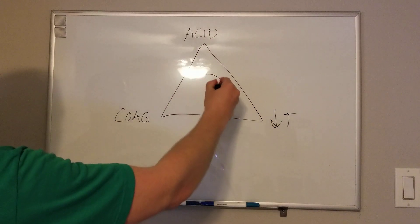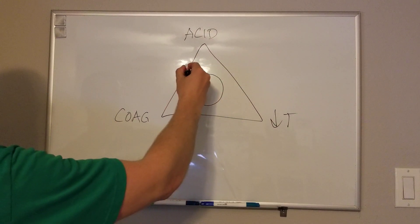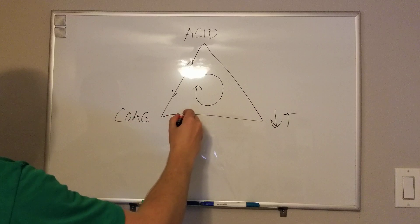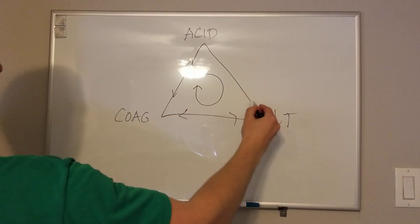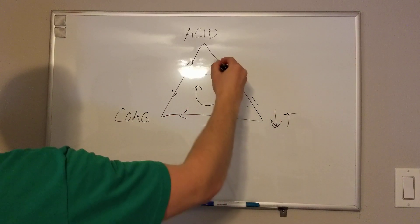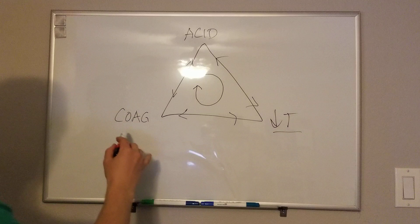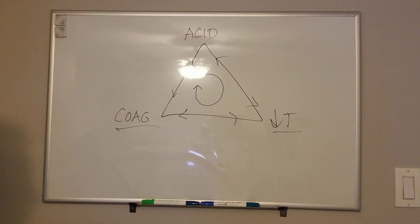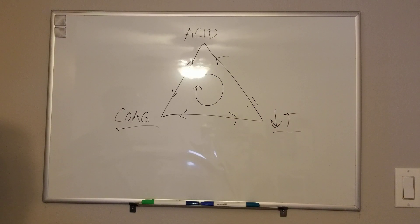The reason this is called a lethal triad is because these three things are all interrelated and affect each other. For example, if you are hypothermic, you will become coagulopathic because the proteins that constitute your clotting factors won't function like they normally should.